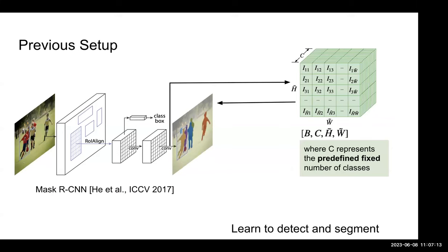In the previous setup of neural models, the output features — the heat map — have B, C, H, and W channels, where B represents batch, C represents the predefined fixed number of classes, and H and W mean the corresponding height and width. We use tilde-H and tilde-W because due to memory limitations we usually downsample images, so the height and width of the output features may not equal the original image size.